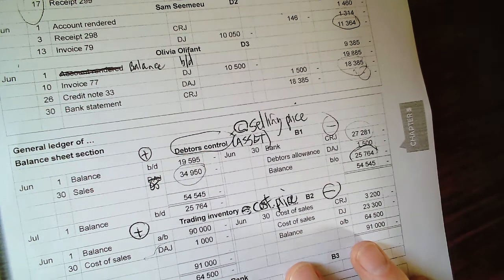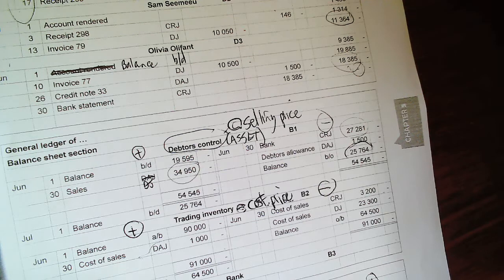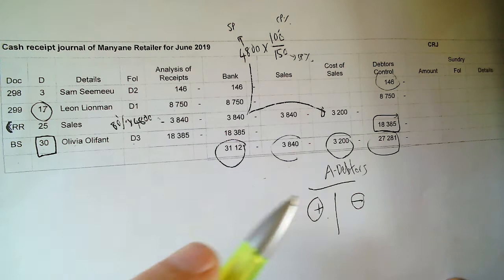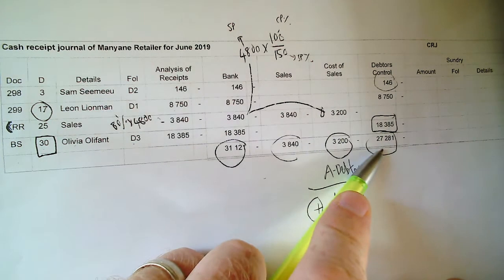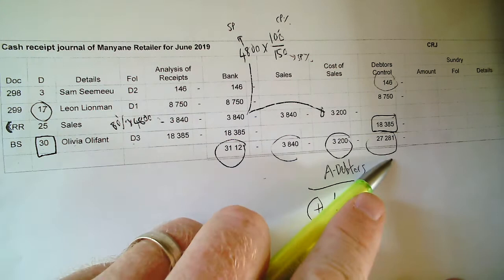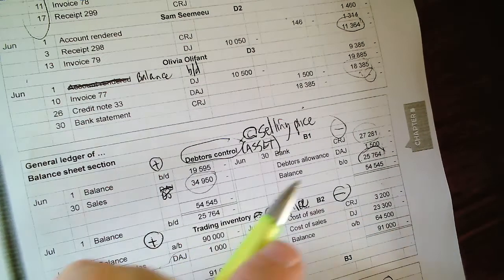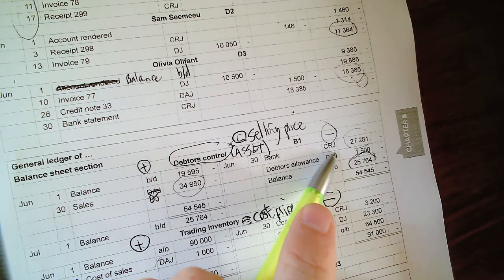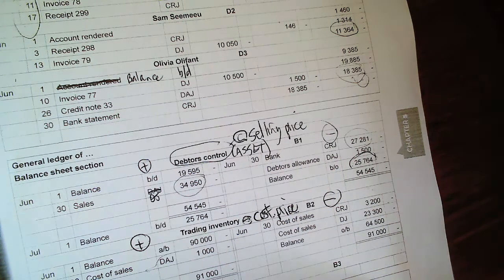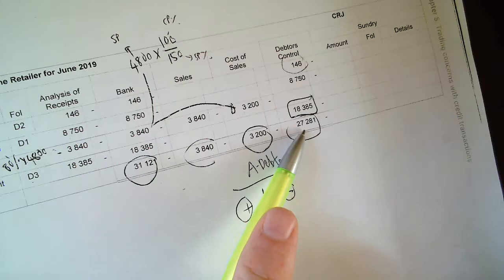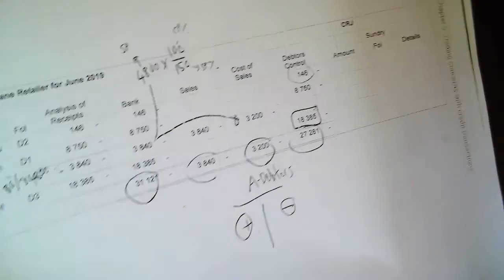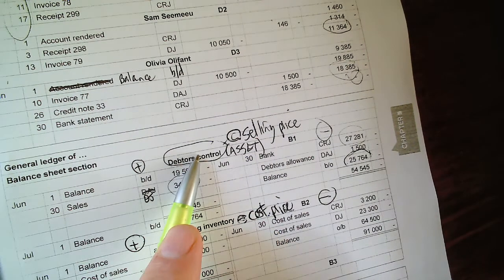Now for the CRJ — remember we're working on the debtors control account in the general ledger. I look for the debtors control column in the CRJ: 27,281. That's what debtors paid, so it decreases the amount people owe me. It comes from the CRJ, and the other account is bank, because the main account in the CRJ is bank and debtors paid cash into the bank account. Debtors control is credited with 27,281.